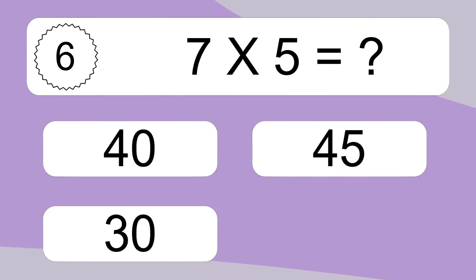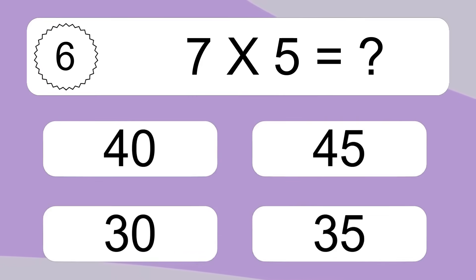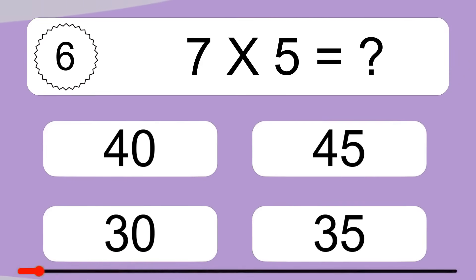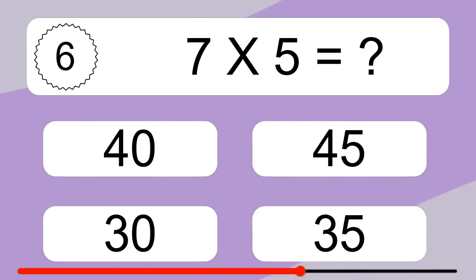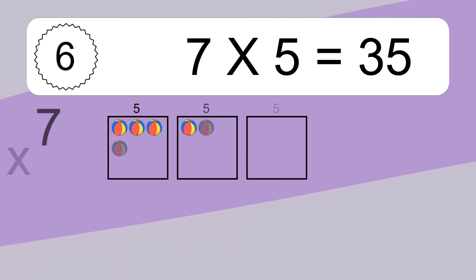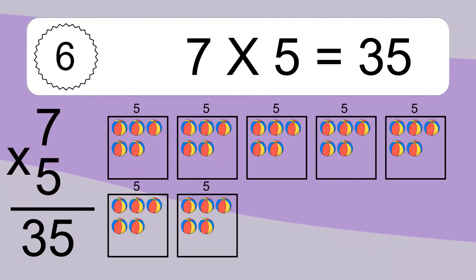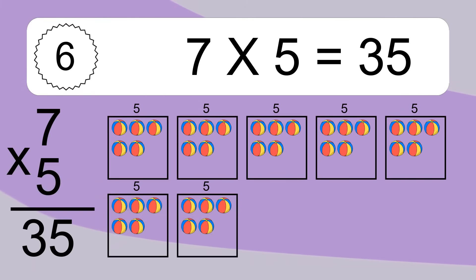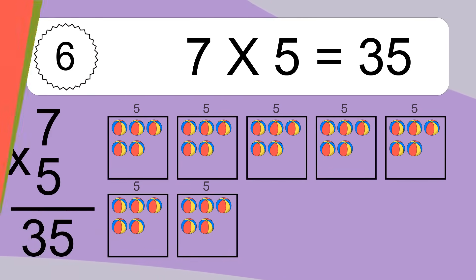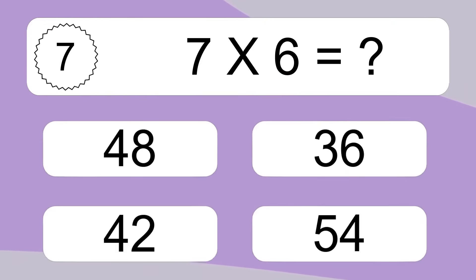7 times 5 equals what? 7 times 5 equals 35. We have 7 boxes and each box has 5 colorful balls inside. If you count all the balls in all the boxes together, you will have 7 times 5 balls. This equals 35 balls.